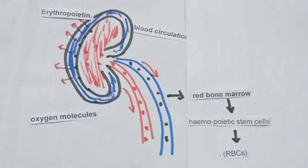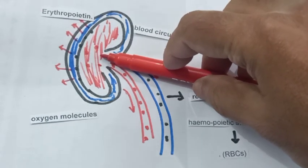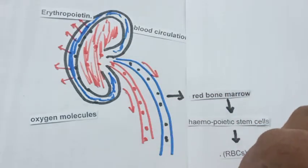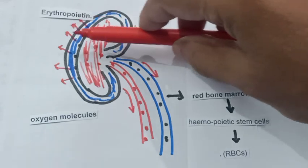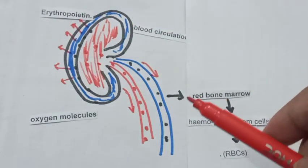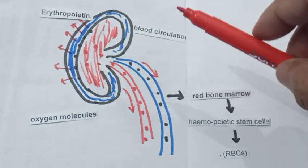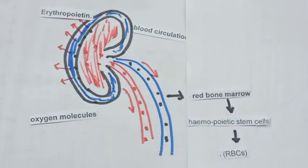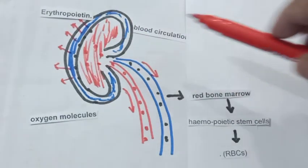The kidney is a dual functioning organ which excretes waste products from the body and produces some specific hormones, like erythropoietin. The kidney produces another hormone along with erythropoietin called calcitriol. Calcitriol is another hormone produced by the kidney.